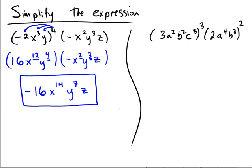On the right-hand side: we have 3 cubed, a squared cubed, b squared cubed, and c cubed cubed. 3 times 3 is 9, times 3 is 27. a to the 2 times 3 is a to the 6th. b to the 2 times 3 is b to the 6th. And c to the 3 times 3 is c to the 9th.